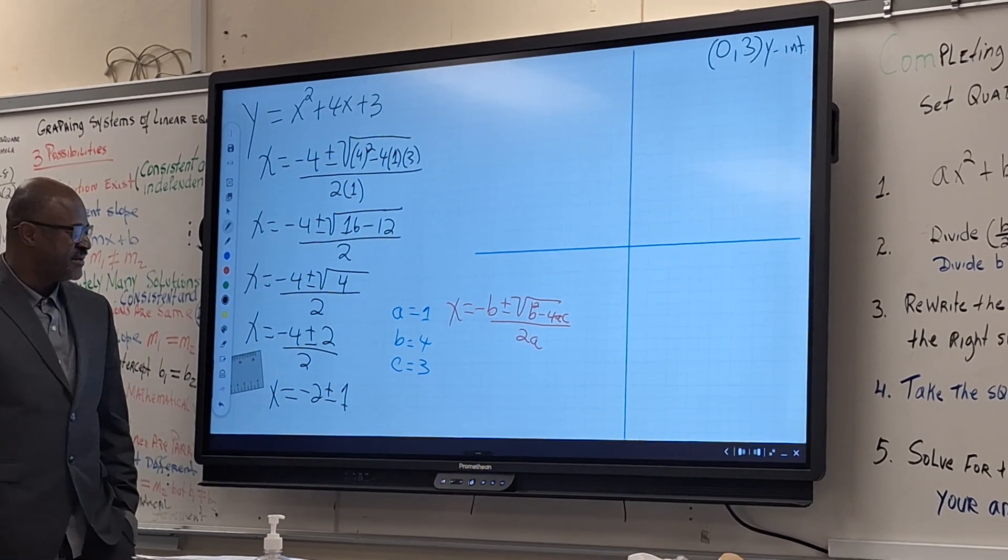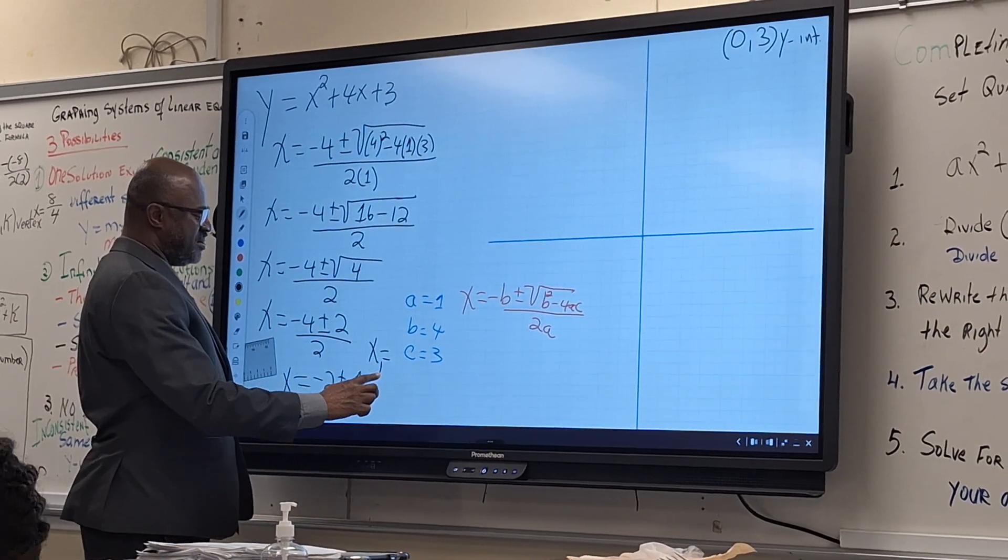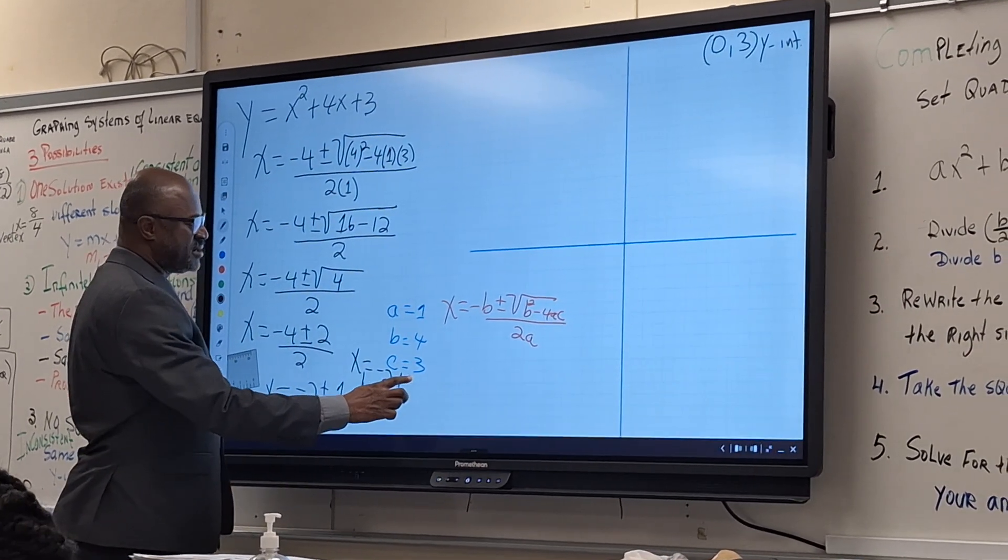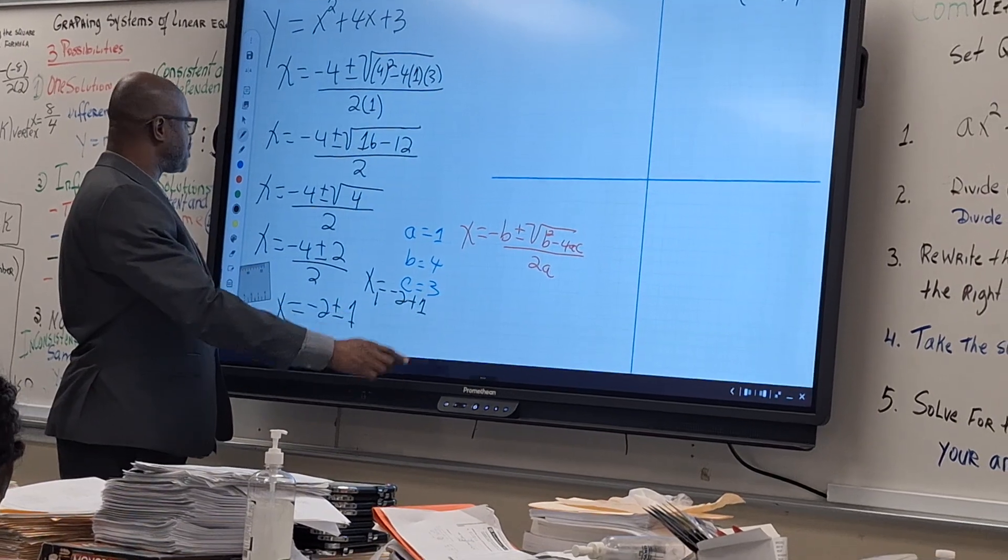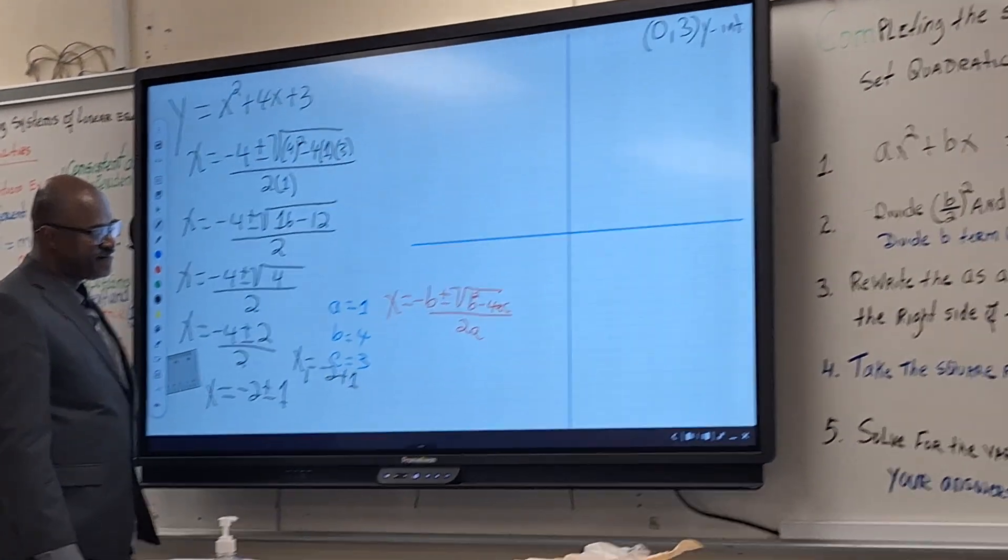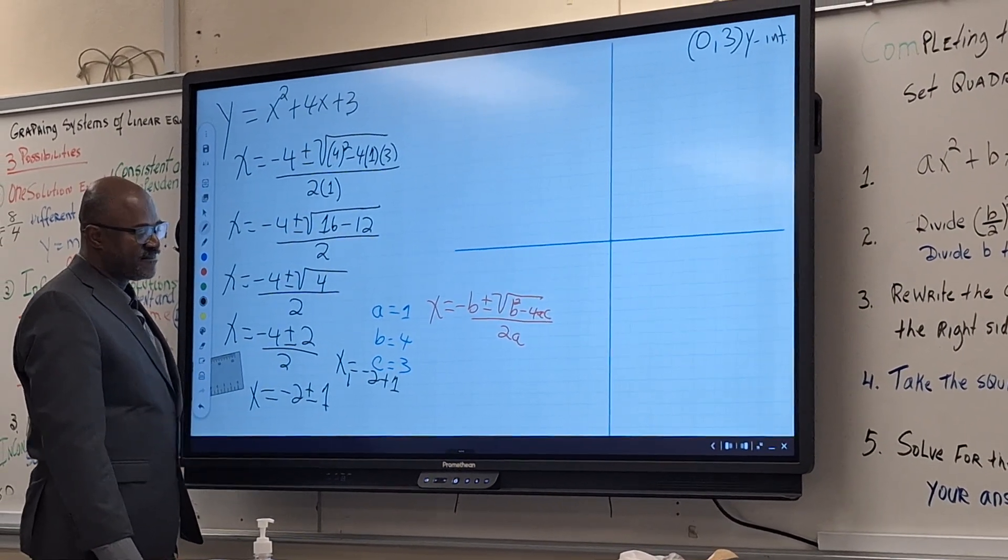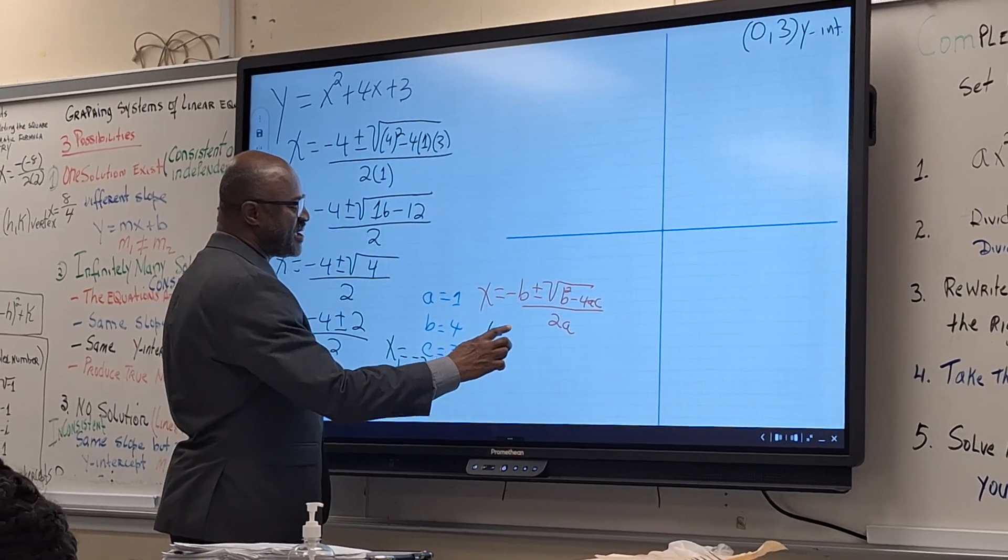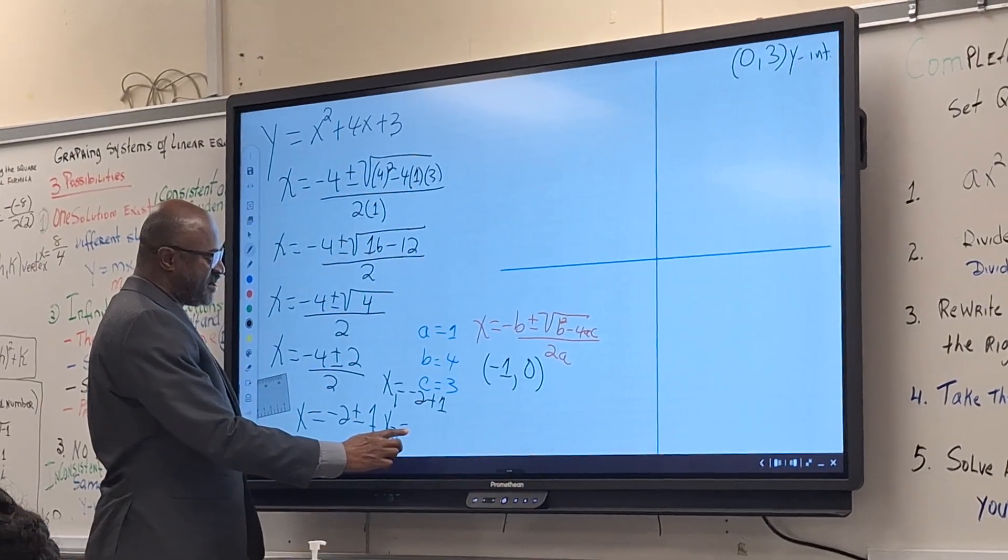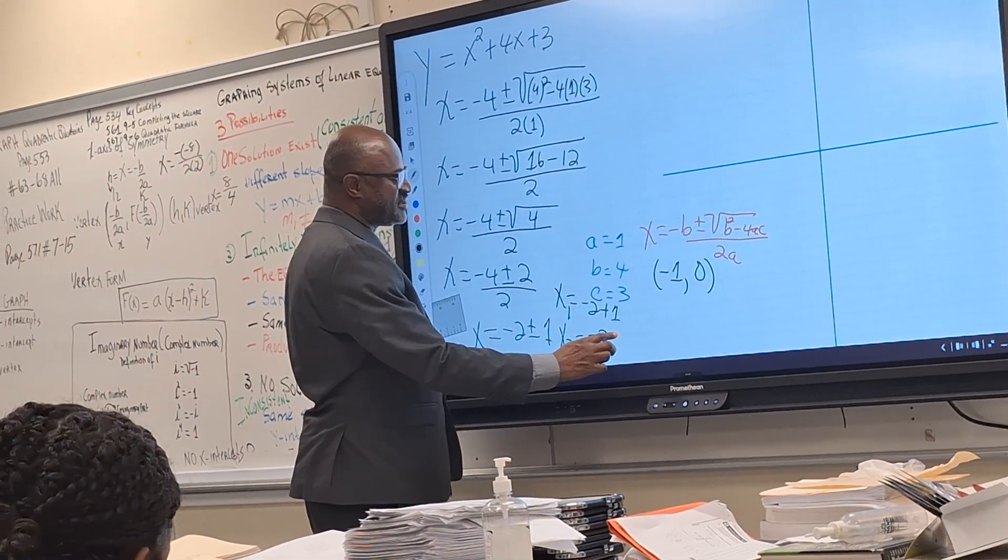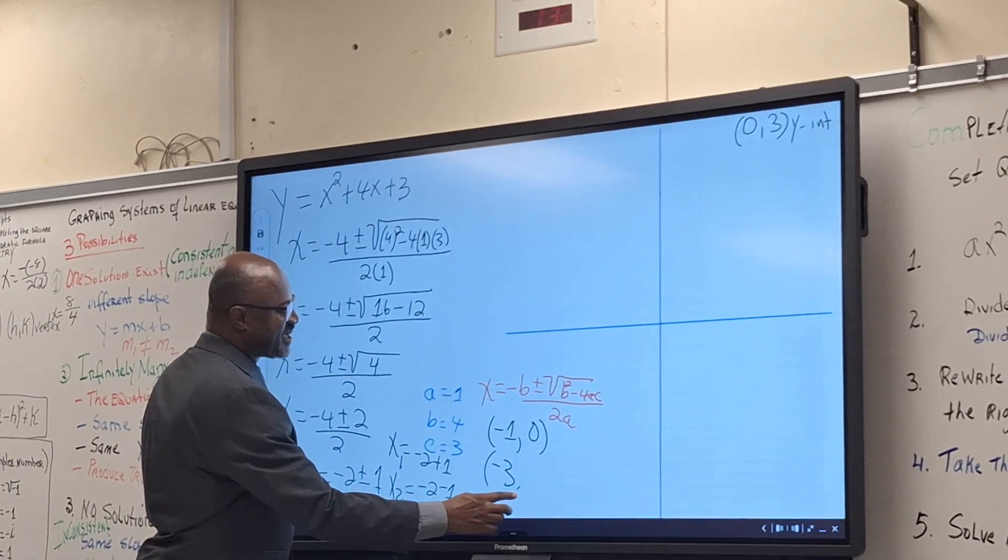Based on that we're going to find the two x-intercepts. The first one will be x one with minus two plus one. What is that? Minus two plus one is negative one. Then one of the x-intercepts will be negative one comma zero. The second: negative two minus one. What is the second x-intercept? Negative three. That will be the second x-intercept.